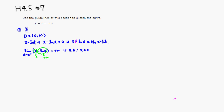Let's look at the first derivative. y prime equals 1 minus 1 over x. Taking the common denominator gives (x minus 1) over x. Setting that equal to 0 gives x equals 1, which is our critical number.